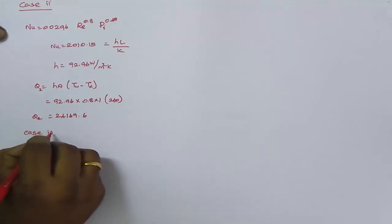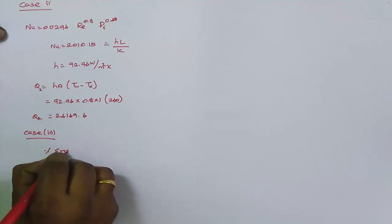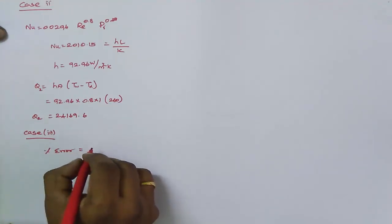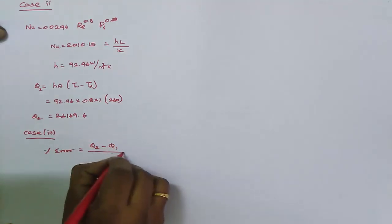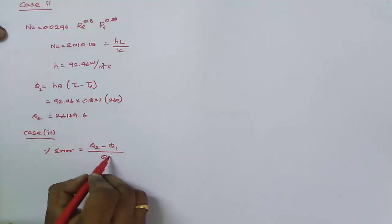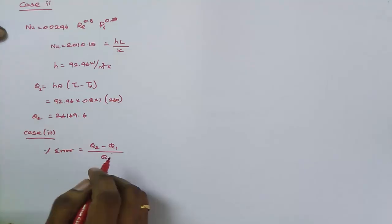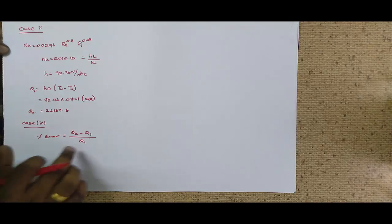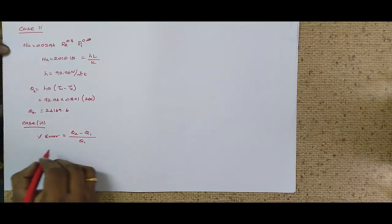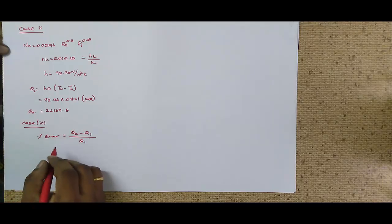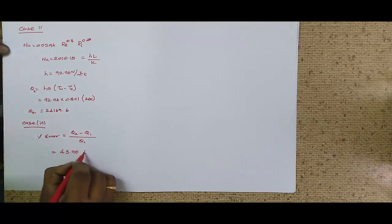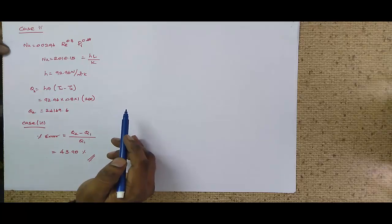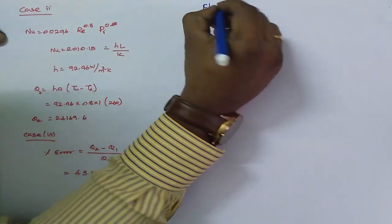Case 3 — percentage error: error = (Q2 − Q1)/Q1 × 100. Substituting Q2 and Q1, the percentage error is 43.90%. The denominator uses Q1 as it is the reference (initial) value for the combined laminar-turbulent case.